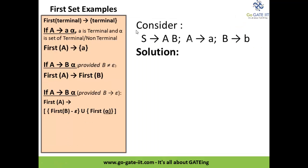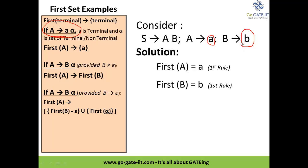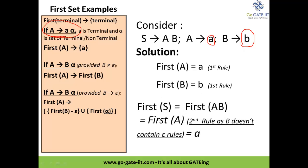We will consider some problems and calculate the first set. We have been given the grammar: S tends to AB where S is the starting symbol, A gives small a, B gives small b. So first of A is calculated as 'a' — following the first rule, A gives the very first symbol 'a'. Then first of B gives 'b'. First of S is AB, so we calculate first of A because A doesn't contain any epsilon rule, so we won't consider B. First of A is 'a', so first of S is 'a'.